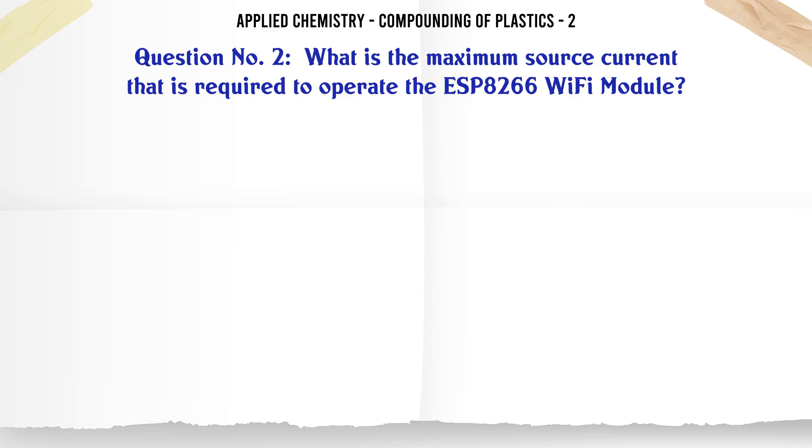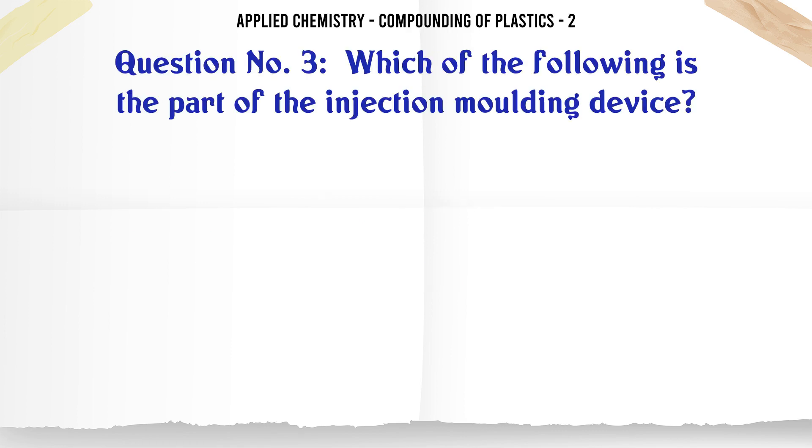What is the maximum source current that is required to operate the ESP8266 Wi-Fi module? A. 28 mA, B. 12 mA, C. 100 mA, D. 1 A. The correct answer is 12 mA. Which of the following is the